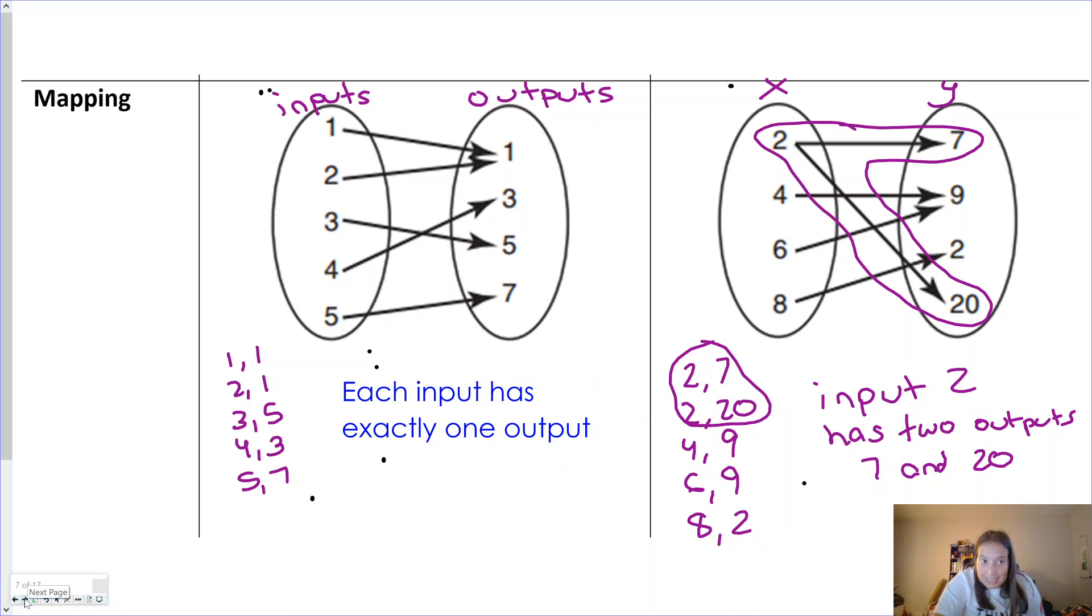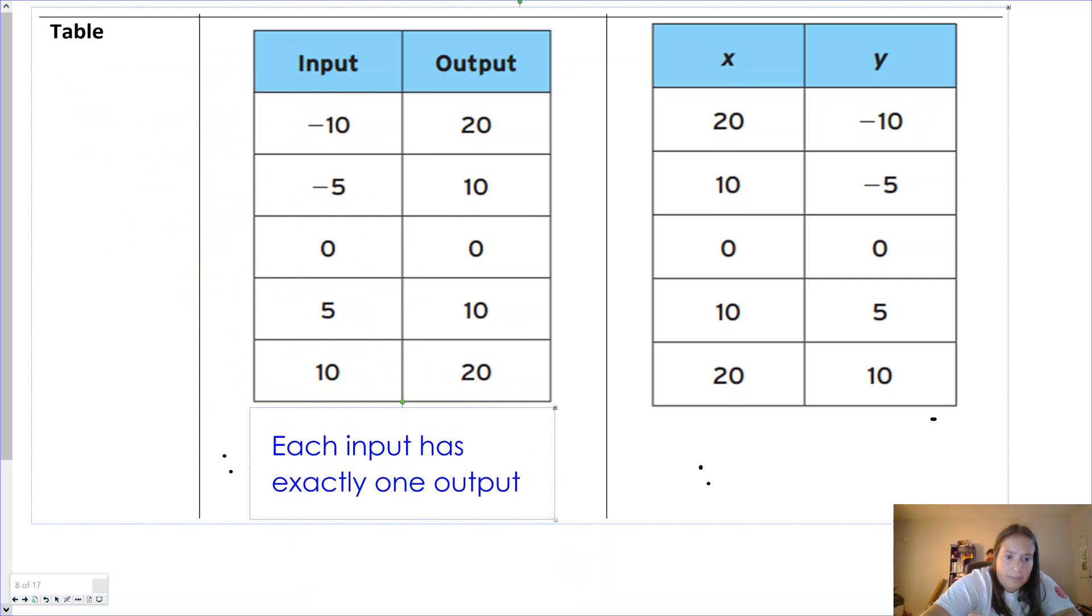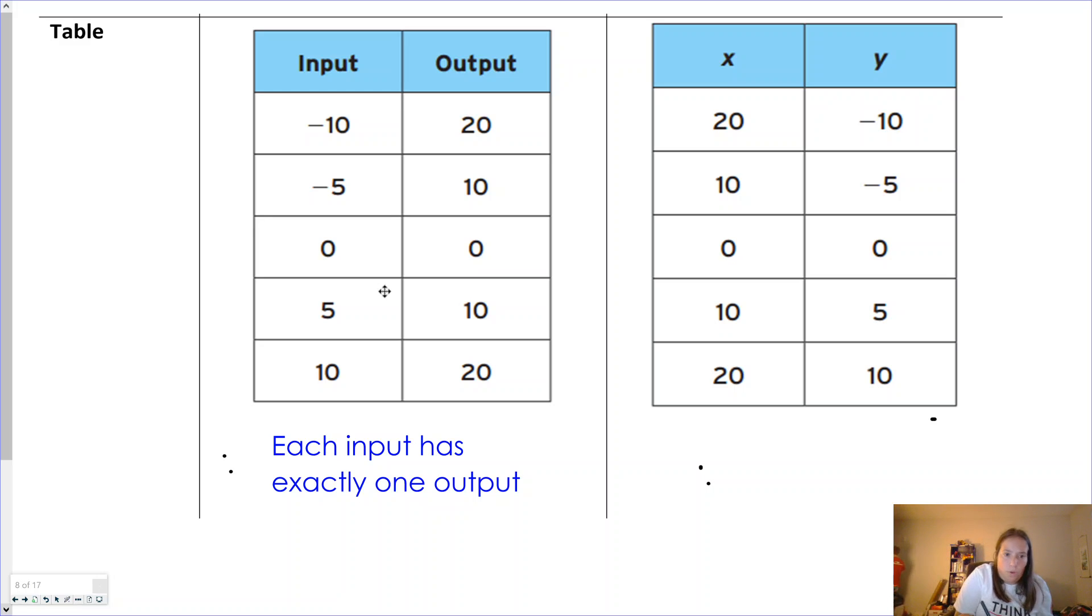If it is a function, the definition will always be, each input has exactly one output. So now we look at these tables where -10 goes to 20, -5 goes to 10, 0 goes to 0, 5 goes to 10, 10 goes to 20. With no problems that I see, it's a function. Each input has exactly one output.